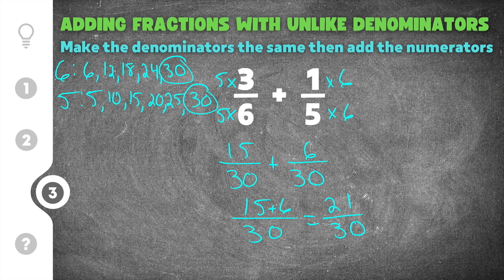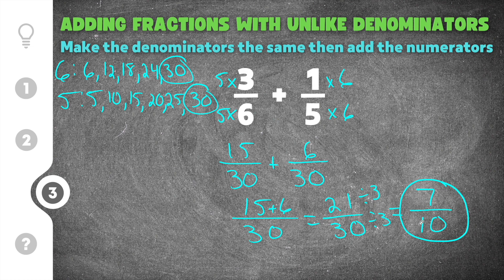Remember to always check if you can reduce. In this case, 21 and 30 both reduce by 3. Dividing the numerator and denominator by 3: 21 divided by 3 is 7, and 30 divided by 3 is 10. So our final reduced answer is seven tenths.